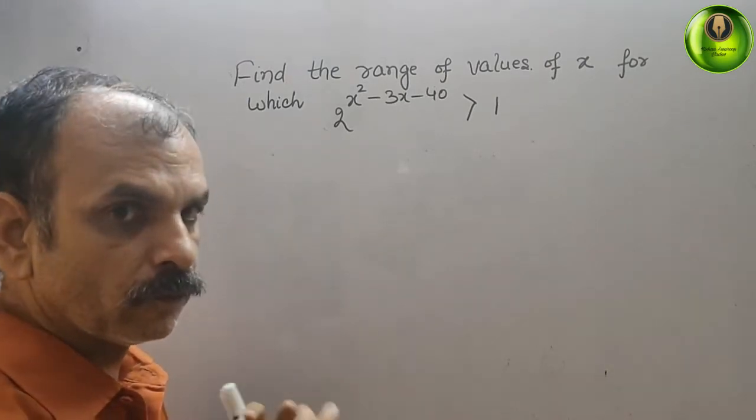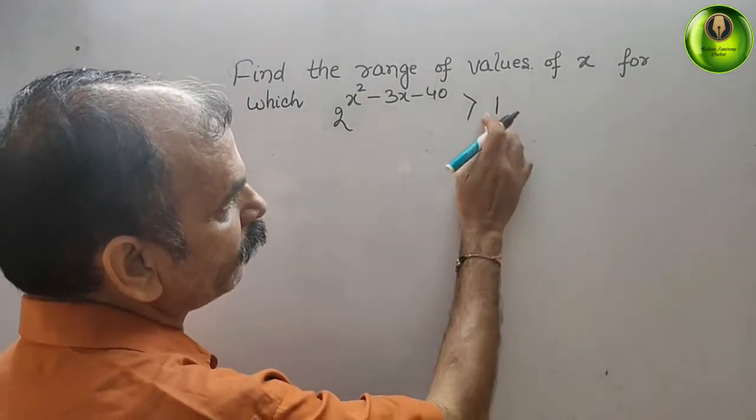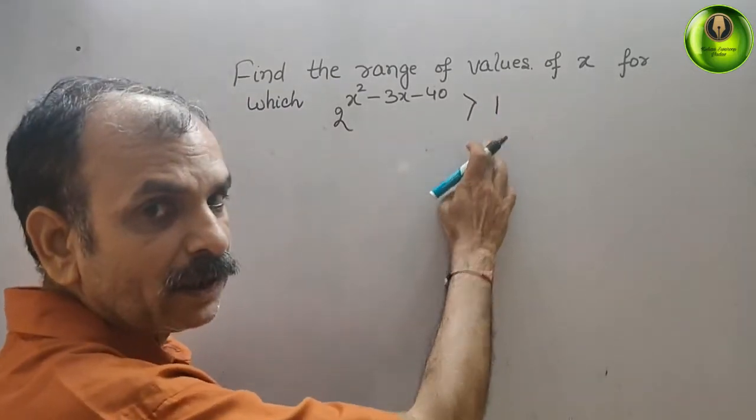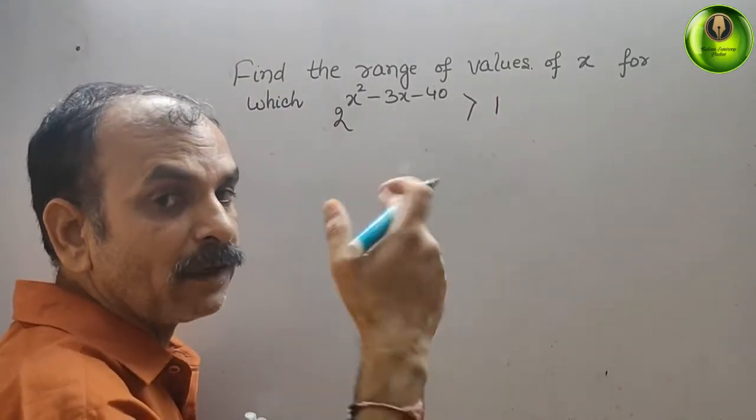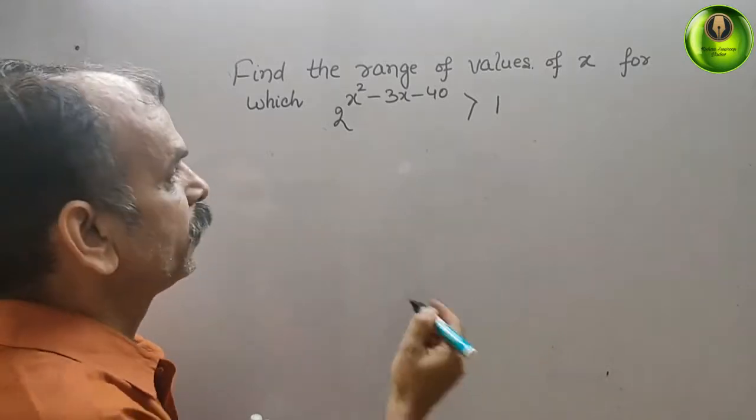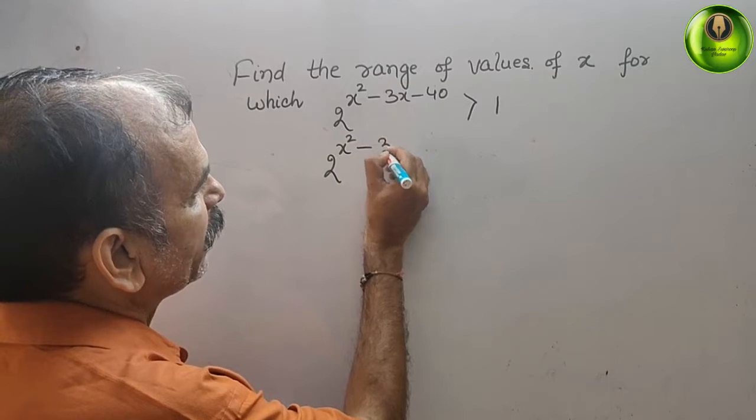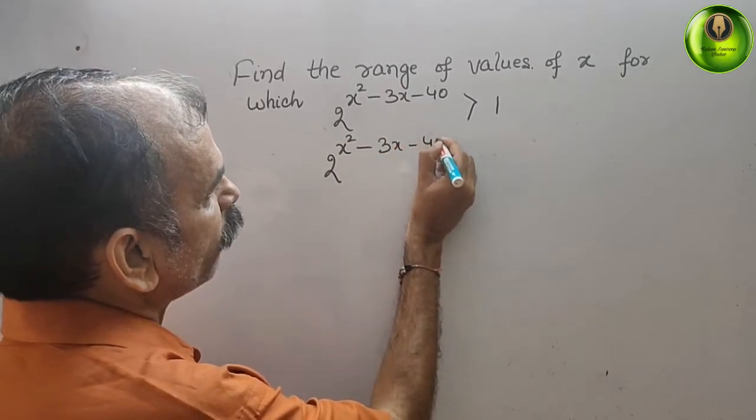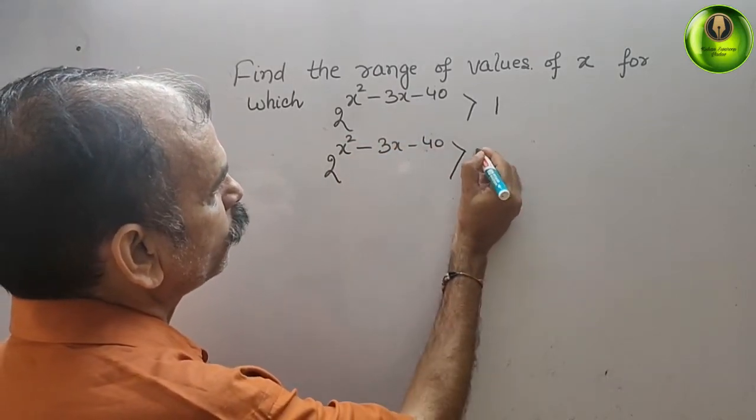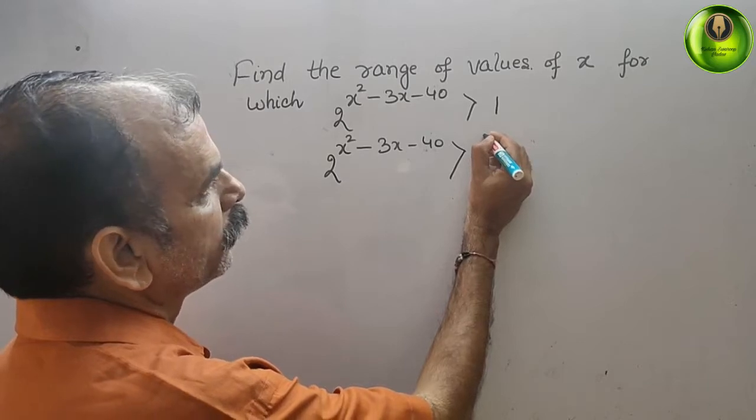We can write this like this. When will we get 1? Any number's power is 0, we will get 1. Therefore, here we will write 2 to the power of x square minus 3x minus 40 is greater than 2 to the power of 0.